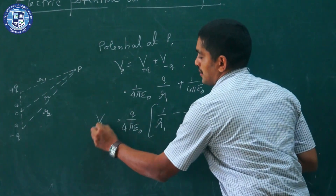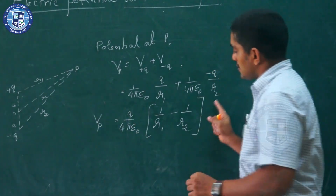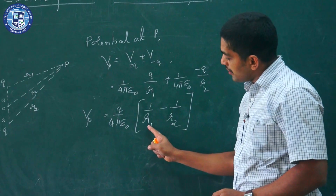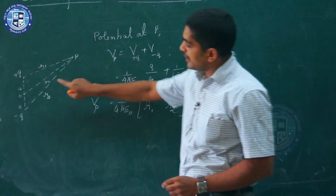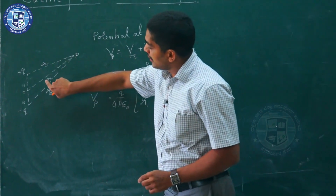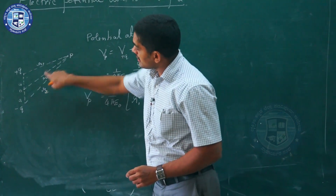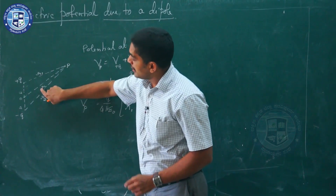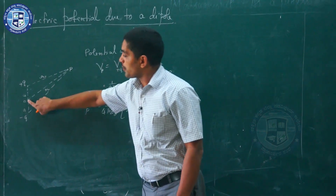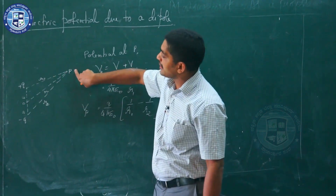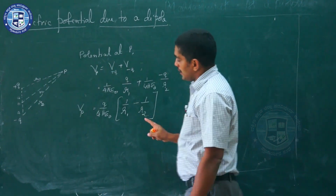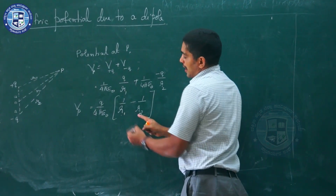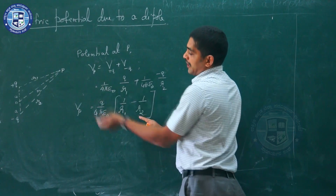This is an expression, but we do not want it in terms of R1 and R2. Instead, we need the potential expressed in terms of the distance R — that is, how far the point is from the center of the dipole. So, let us try to get an expression for R1 and R2 in terms of R.